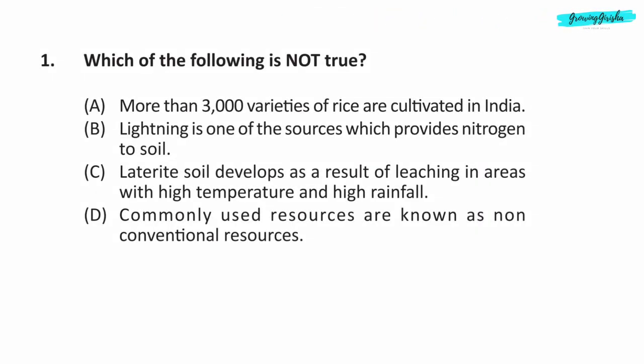Question 1. Which of the following is not true? More than 3,000 varieties of rice are cultivated in India — it is true. Lightning is one of the sources which provides nitrogen to soil — it is true. Laterite soil develops as a result of leaching in areas with high temperature and high rainfall — it is true. Commonly used resources are known as non-conventional resources — it is not true.